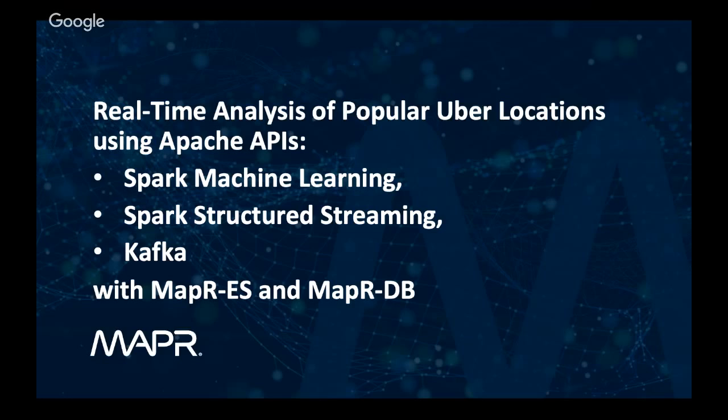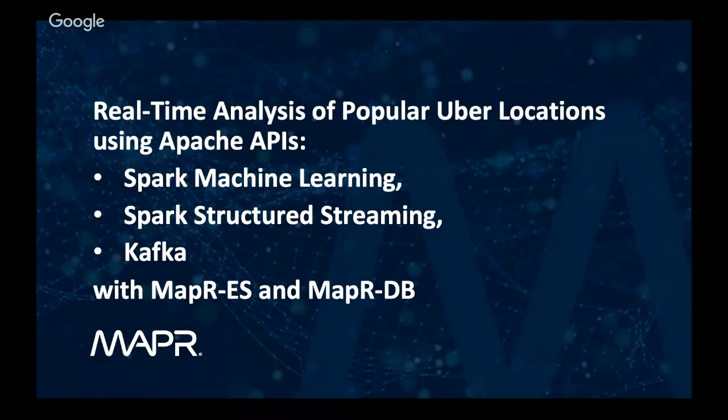We're going to go over real-time analysis of popular Uber locations using Spark machine learning, Spark structured streaming, Kafka, and MapR DB.